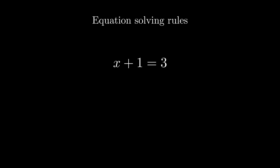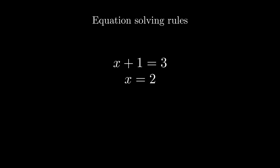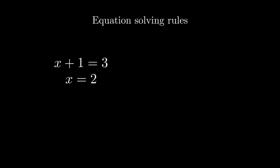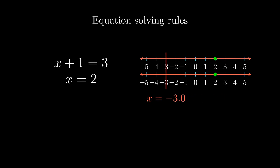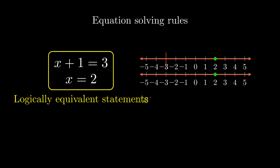This idea also guides the rules for what we are allowed to do with an equation. Suppose we were solving this equation. We simply subtract 1 from both sides, and we're done. But why is this allowed? If we draw the set of solutions for the first equation, then draw the set of solutions for the second equation, we can see they are identical. The move we did — subtracting 1 from both sides — preserves the set of solutions. When two statements have the same solution set, they always have the same truth value. No matter what value we choose for x, the equations are either both true or both false — never one true and one false. We say that these statements are logically equivalent.